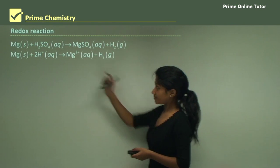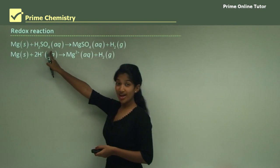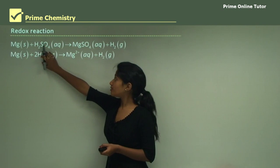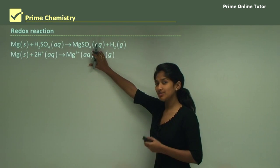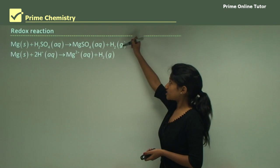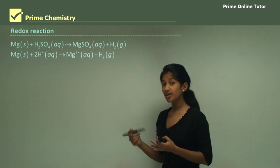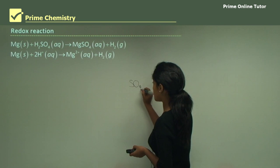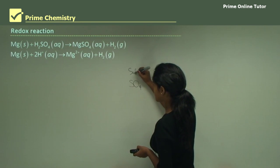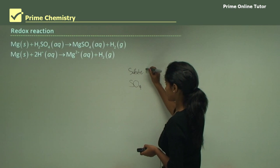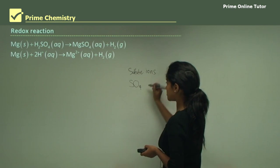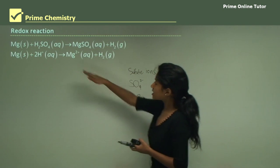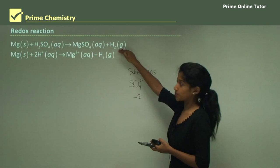Now the redox reaction with magnesium and sulfuric acid. You would write the equation: magnesium reacting with sulfuric acid to give you magnesium sulfate and H₂. Now sulfate has a valency of minus two — remember that. Sulfate ions SO₄²⁻ have a valency of minus two, and the reaction is reacting to form hydrogen gas as well.